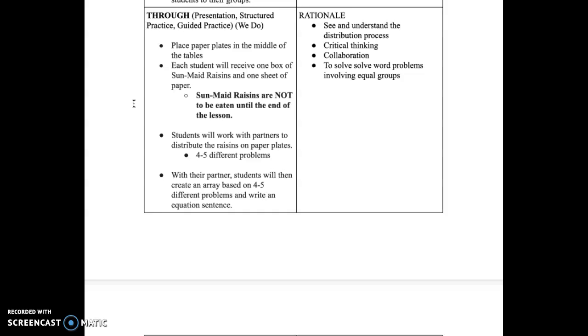With their partners, students will then create an array based on four to five different problems and write an equation sentence. This is where students will use their sun-made raisins to not just distribute into paper plates, but then afterwards they will create an array with their raisins. And this will still be done with their partner. The rationale behind this is to see and understand the distribution process, critical thinking, collaboration, and to solve word problems involving equal groups.